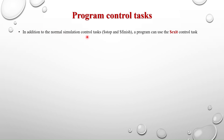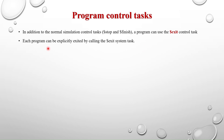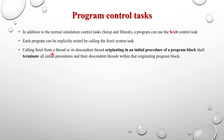Now let's discuss program control tasks. In addition to $stop and $finish, a program can use the $exit control task. $stop suspends simulation into interactive mode; $finish terminates the simulation entirely. A program uses $exit to exit from the process. When $exit is executed, the whole process is exited from the program block. Each program can be explicitly exited by calling $exit from a thread originating in an initial procedure of the program block.